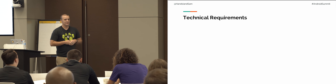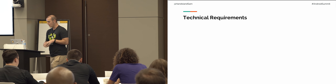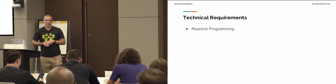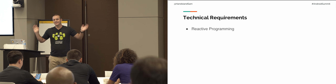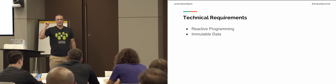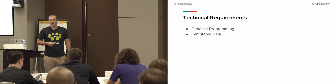But then there are also technical requirements. On a technical level, we wanted to use reactive programming. The way we got away with that is we couldn't use RxJava, but Kotlin coroutines and channels are there, so we went ahead and used those. We wanted immutability — as Chet said in his keynote, Java is really horrible for immutability, but luckily Kotlin is great for it.